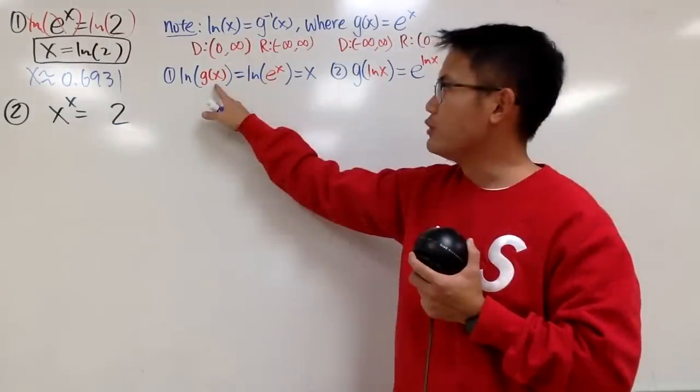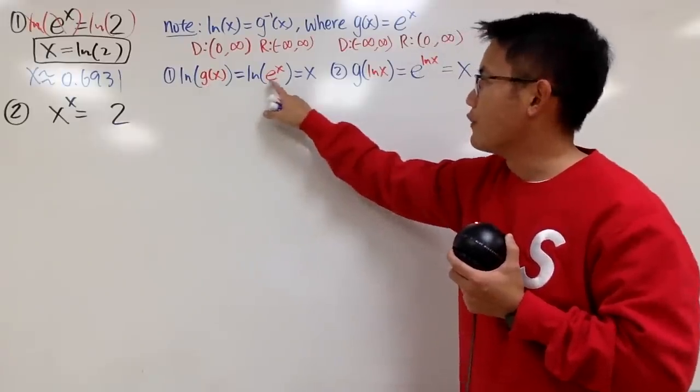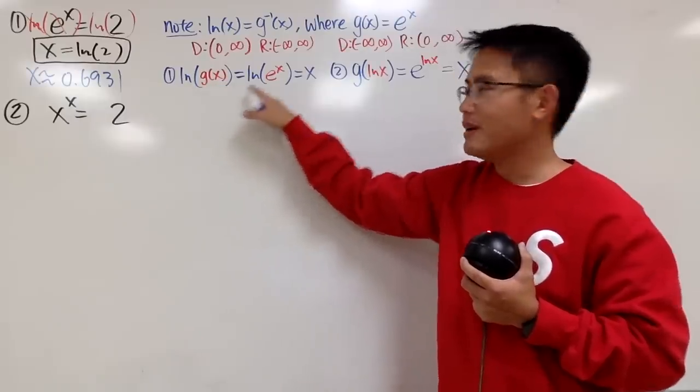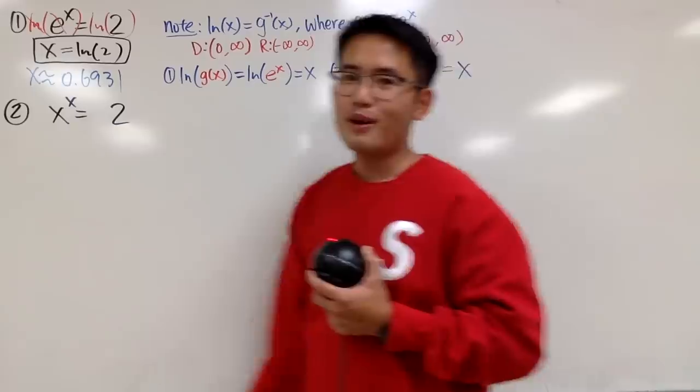So if you put the original in, so you're talking about ln of g of x, which is saying ln of e to the x. And you see, they cancel because ln is the inverse of g. So they cancel and just get the x. And that's what we did right here.